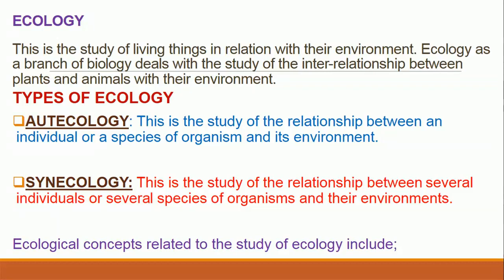The second type is synecology. Synecology is the study of the relationship between several individuals, or several groups or species of organisms, and their environment. The major focus here is several individuals or several species. For example, if an ecologist decided to study ten dogs at the same time, or several species such as humans, dogs, rats, and maize plants all at the same time in relation with their environment, such a study is synecology.